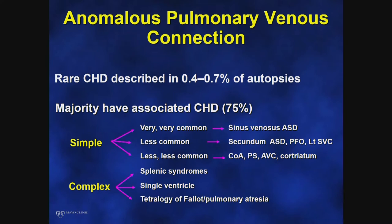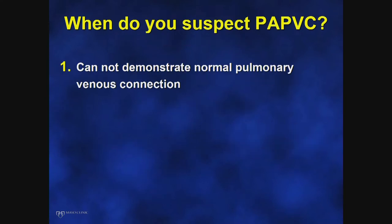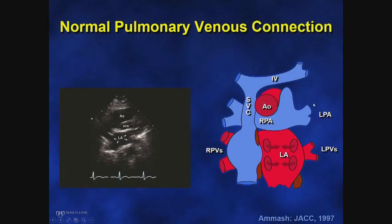For the rest of the lecture today, I'm going to talk about partial anomalous pulmonary venous connection. The most important thing is to identify when you need to suspect it. You suspect it when you don't see the normal pulmonary venous connection. In a normal heart, you typically have two pulmonary veins emptying the left lung and two or three pulmonary veins emptying the right lung.